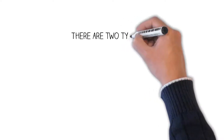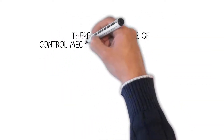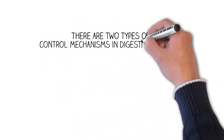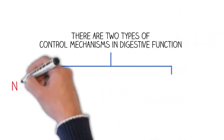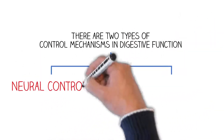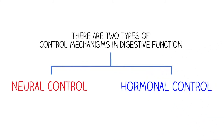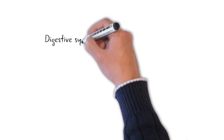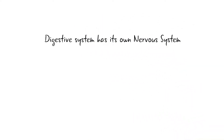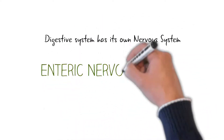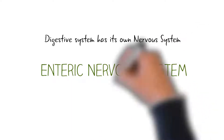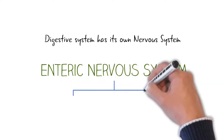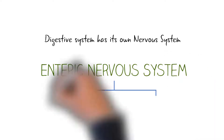There are two types of control mechanisms associated with digestion: neural control and hormonal control. We can have a look at the various neural control mechanisms of digestion. The digestive system has its own nervous system, known as the enteric nervous system. It is formed of two nerve networks, namely the myenteric plexus and the submucosal plexus.